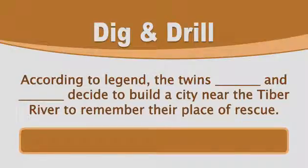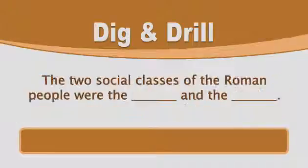Dig and drill. According to the legends, the twins Romulus and Remus decided to build a city near the Tiber River to commemorate their place of rescue. And the two social classes of the Roman people were called the Patricians and the Plebeians.